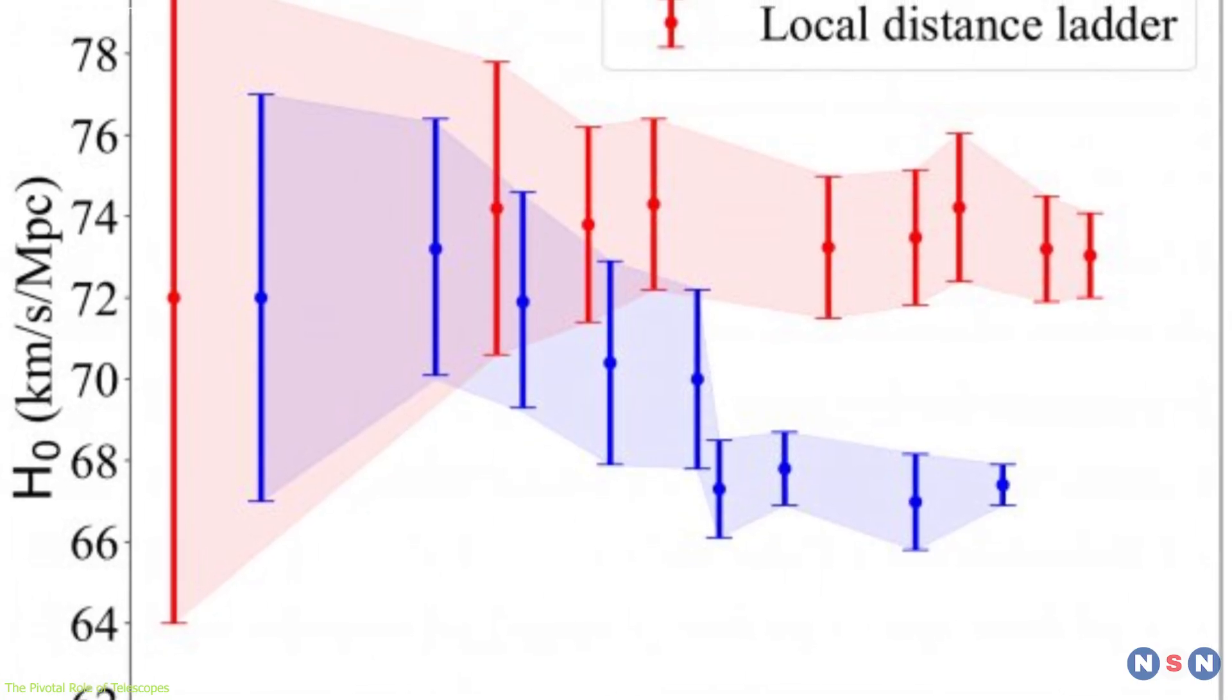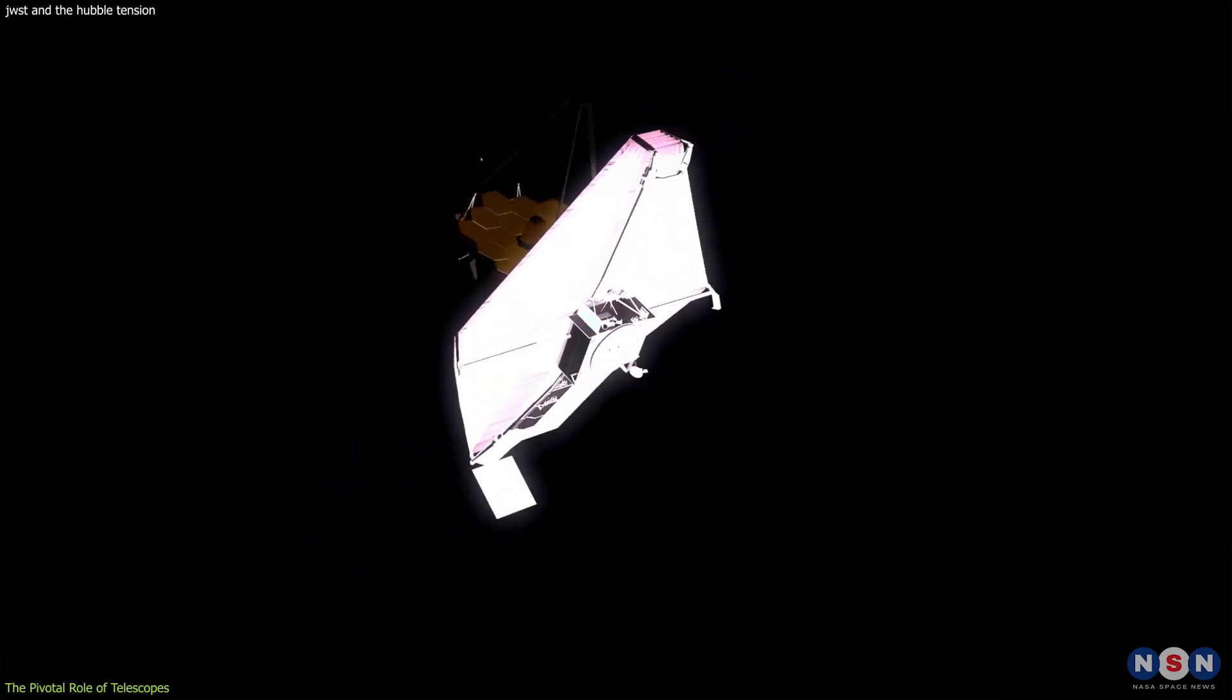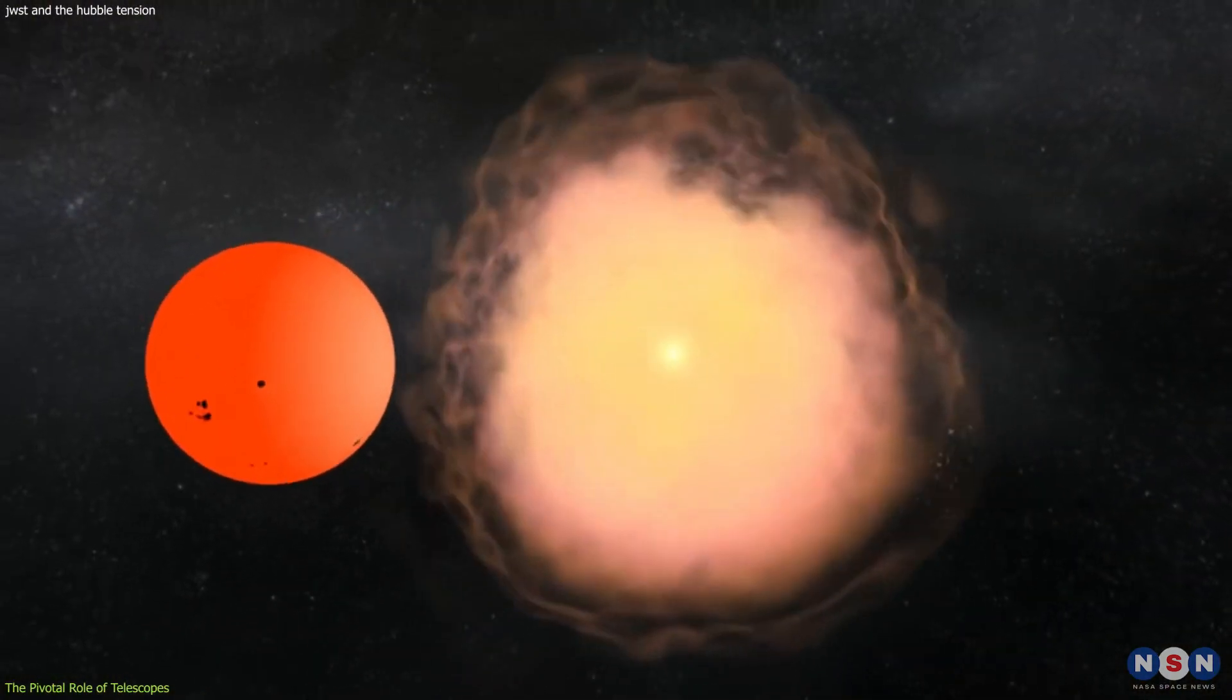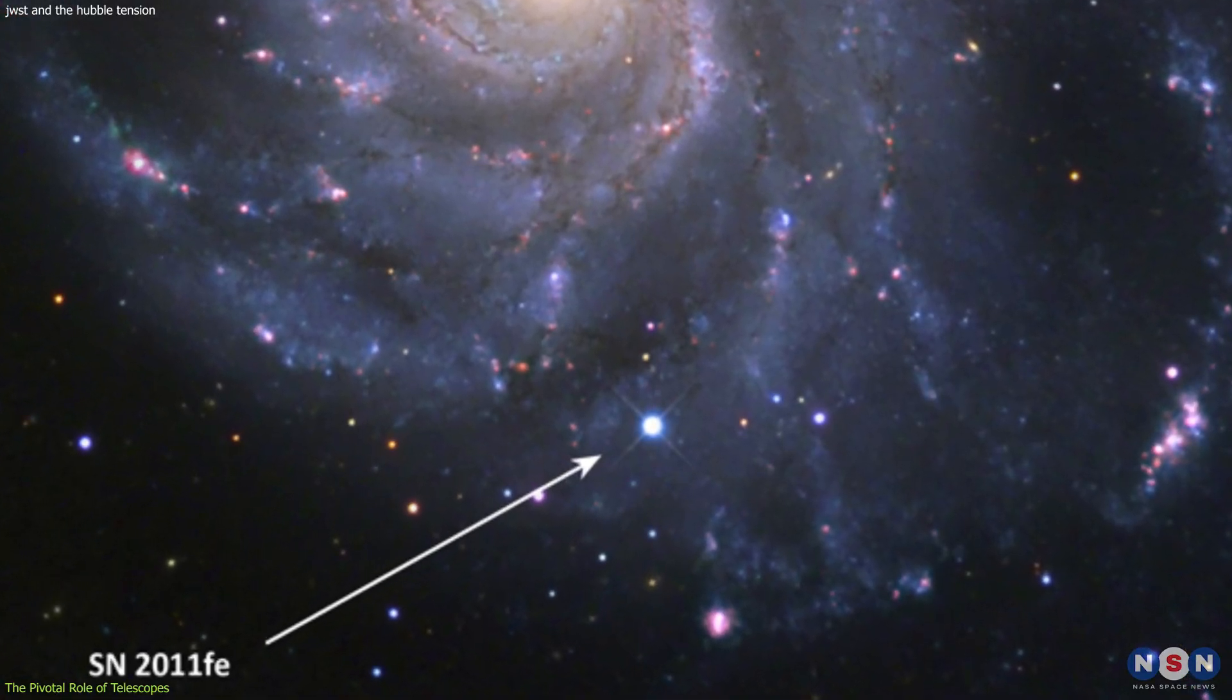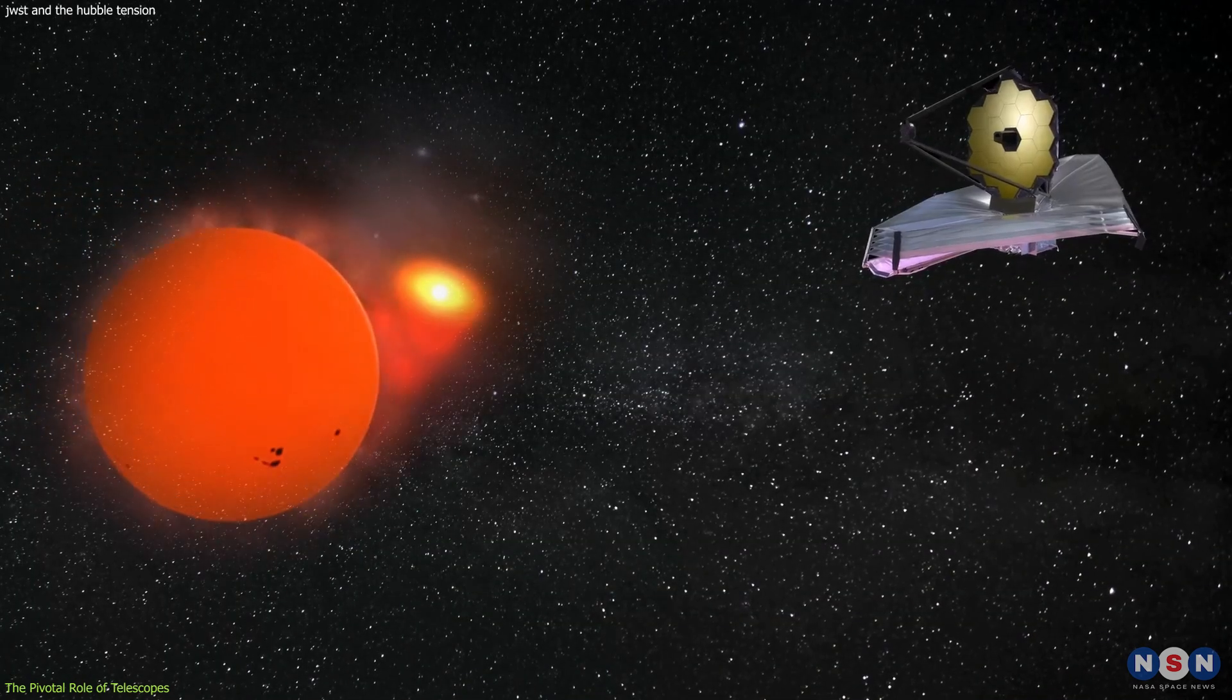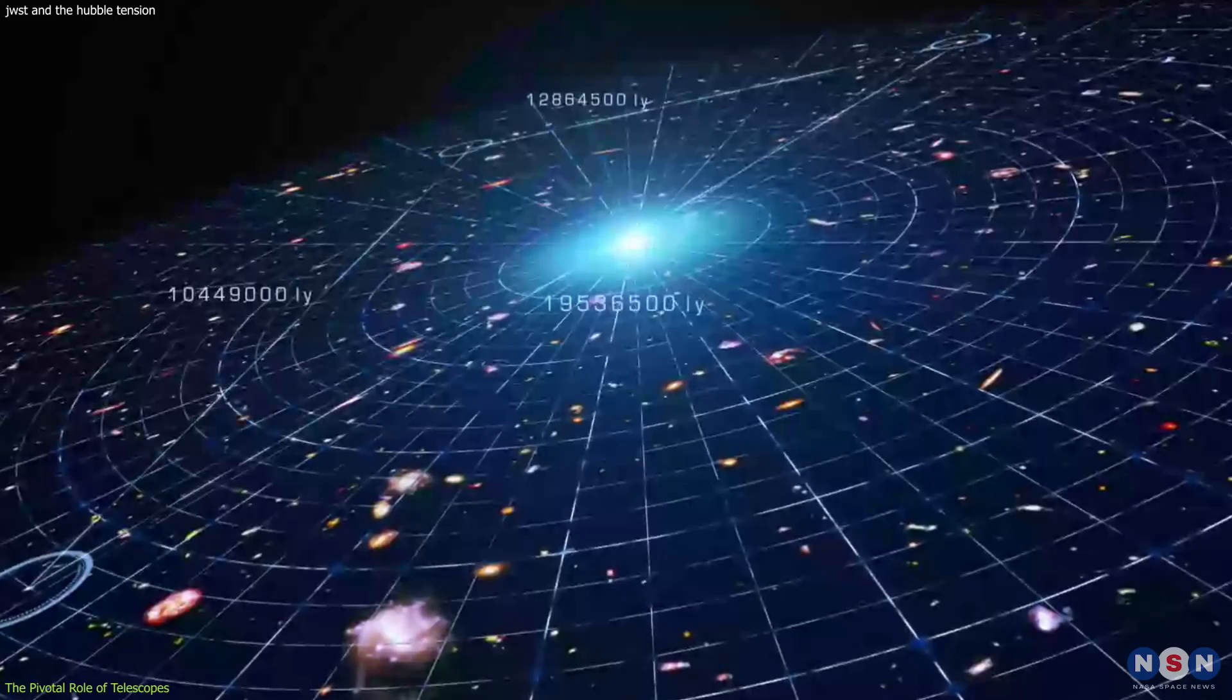The synergy between Hubble's legacy and Webb's advanced capabilities is providing unprecedented precision in our measurements, further strengthening the case that the discrepancy in the expansion rate is not merely a result of measurement errors. However, the advent of the James Webb Space Telescope has marked a new era in the field. Webb has the capability to observe Type Ia supernovae in distant galaxies. These supernovae are another key tool for measuring cosmic distances, as they have a consistent intrinsic brightness that makes them excellent standard candles. By observing these supernovae, Webb can extend the cosmic distance ladder to greater distances, providing a more comprehensive view of the universe's expansion rate.